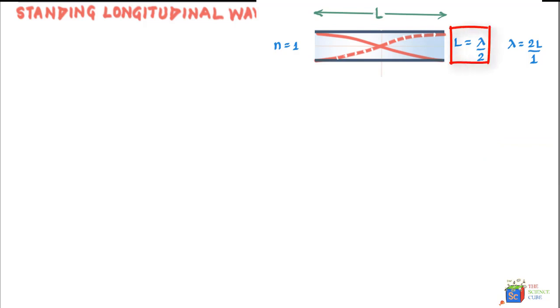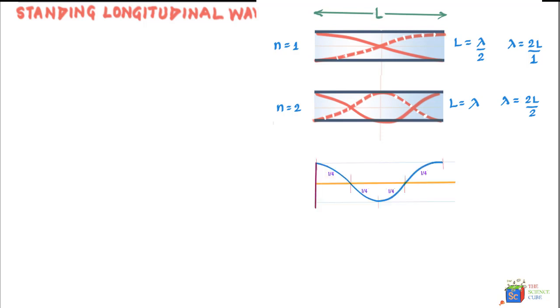So for first harmonic, L should equal lambda upon 2 or lambda should equal 2L. So next we create a wave in the pipe such that you have two nodes or visually there are two points in the pipe where the particles of the air have zero motion and this pattern then produces a sound called the second harmonic and requires sound waves of wavelengths such that L is equal to lambda. Well, you can see that this is one full wavelength, it starts from here and ends at the same point up here. So L is equal to lambda or let us write lambda is equal to 2L upon 2 and soon you'll understand why I'm writing it this way.